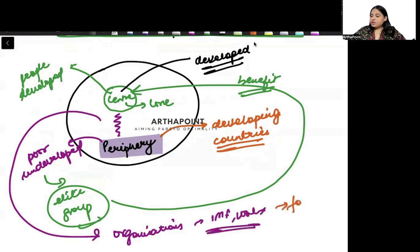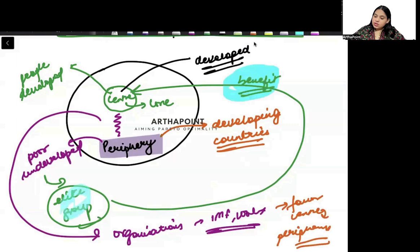But these organizations favor the center or core at the cost of periphery, and the elite group benefits from this favoritism. Other people will be poor in this periphery.